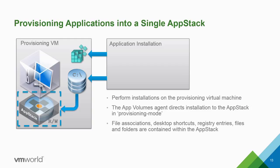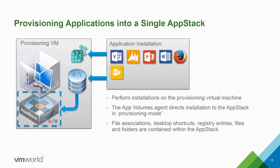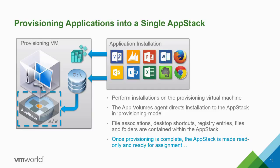When provisioning applications, you mount the App Stack template in read-write provisioning mode from the console, pick your provisioning machine, connect it, and start installing applications — including file associations and registry entries. You can install multiple applications. When done, you reboot, end the provisioning process, make the App Stack read-only, and it's ready to be provisioned to users.